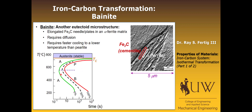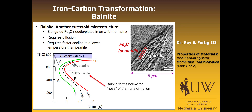To form bainite, we have to cool faster to a lower temperature than pearlite. For example, if we cool to just above 600 degrees and hold, we end up with 100% pearlite. If we cool down to around 500 degrees and hold, we end up with 100% bainite. Bainite forms anywhere below the nose of the transformation. If we're in the region below the nose, we form bainite; if we're above the nose, we form pearlite.